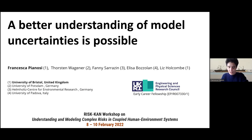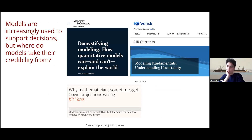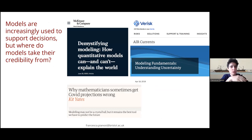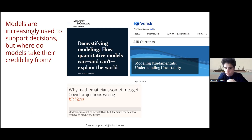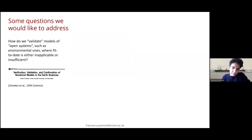I think the title of my talk is self-explanatory, and equally I don't need to explain too much why we need to look at the problem of uncertainty. Models are increasingly used to support decisions, so there is a lot of discussion about where these models take their credibility from given all the uncertainties they are affected by. I'll throw a few examples — not even from the scientific community, these are from blogs or journal articles from companies, and one from The Guardian, talking about the problem of models whose predictions are wrong.